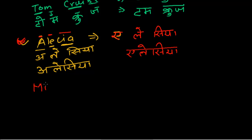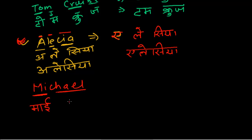Next, let me write Michael — M-I-C-H-A-E-L. In English we say 'Michael,' but in Hindi people often pronounce it as 'Michael' or 'Michaala.' It's 'ma' + 'e' and then 'call' — so 'ka-la' — making it 'Michael.' Together we write it as: ma-e-call, with a half 'call.' Michael — simple.